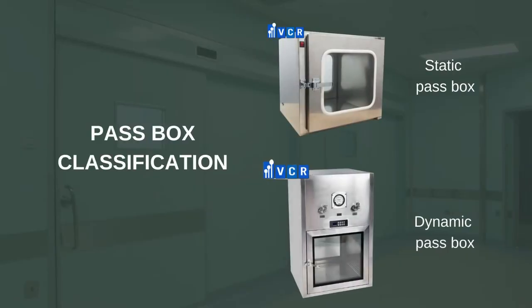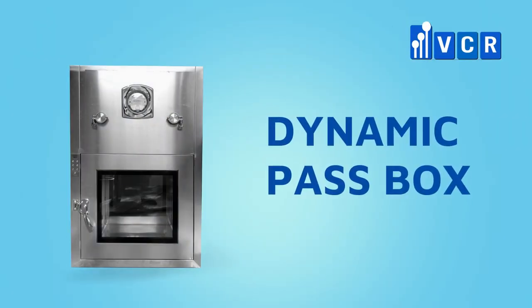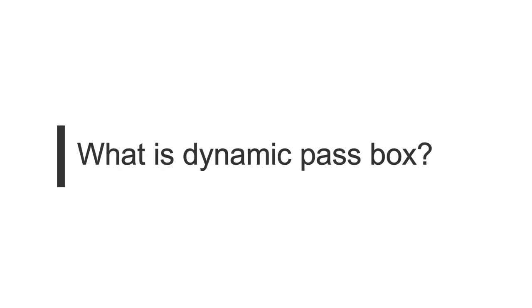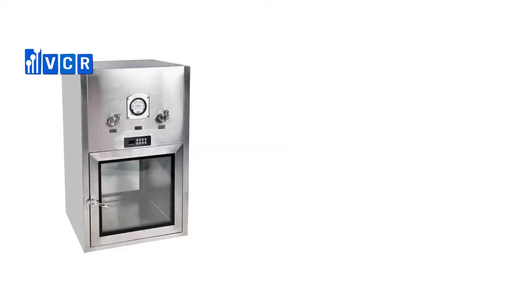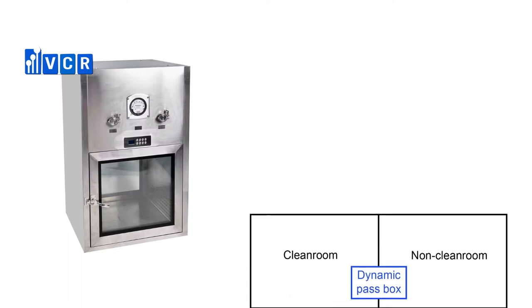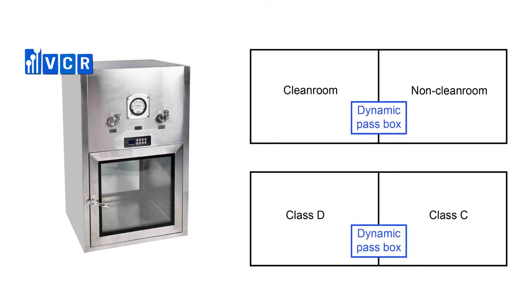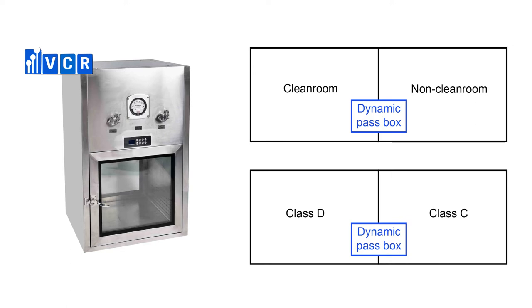According to their purpose, pass boxes for clean rooms are divided into two types: the static pass box and the dynamic self-cleaning pass box. In this video, we will focus on the dynamic pass box. A dynamic pass box is normally used to transfer materials and goods between clean rooms of different levels, or between a clean room and a non-clean room.